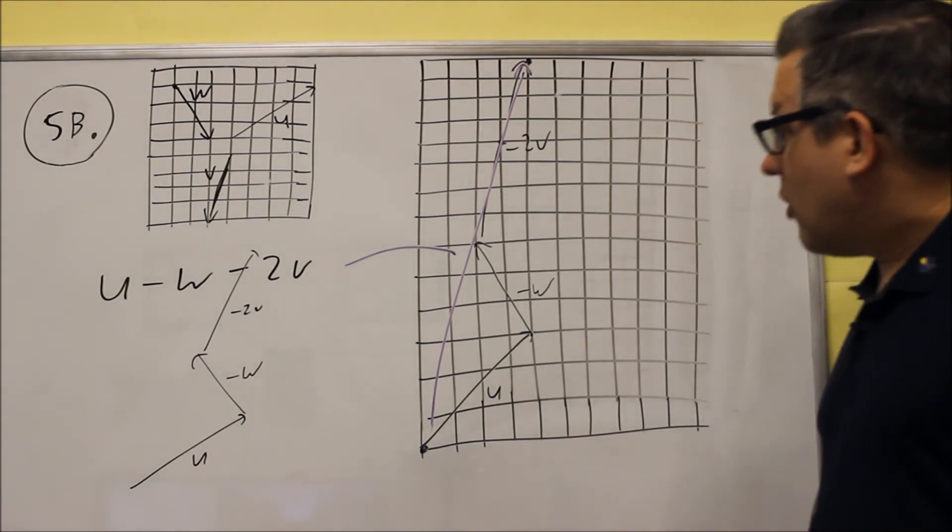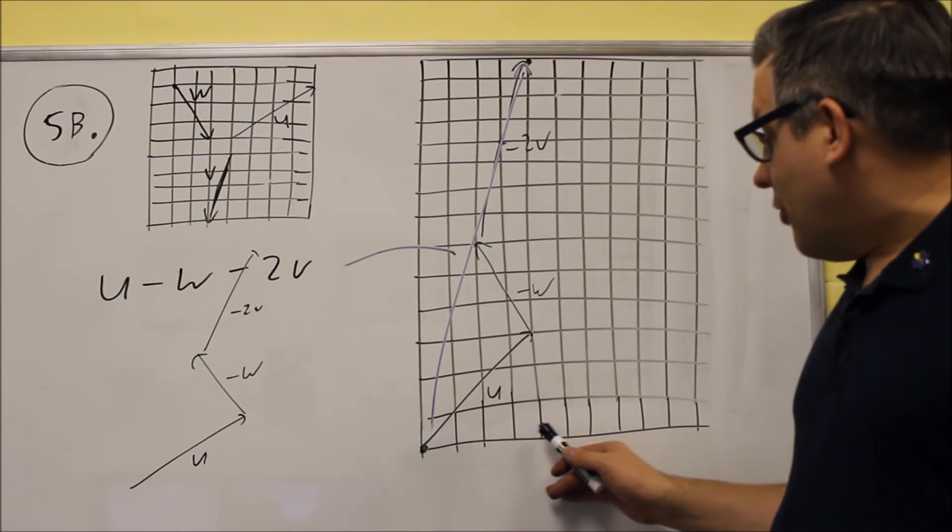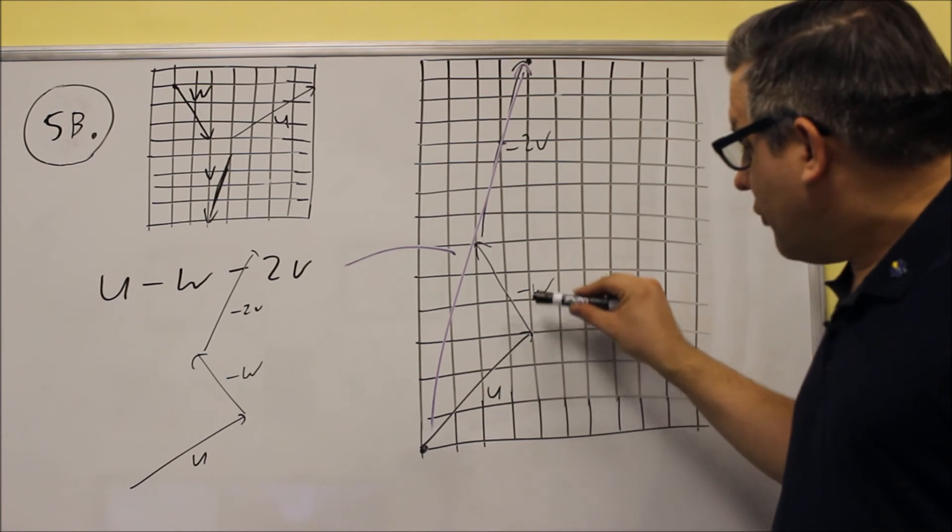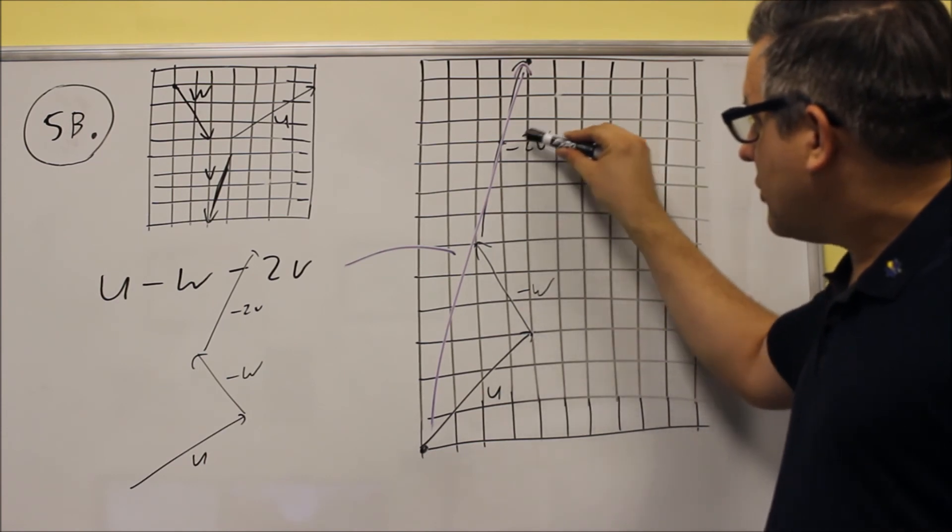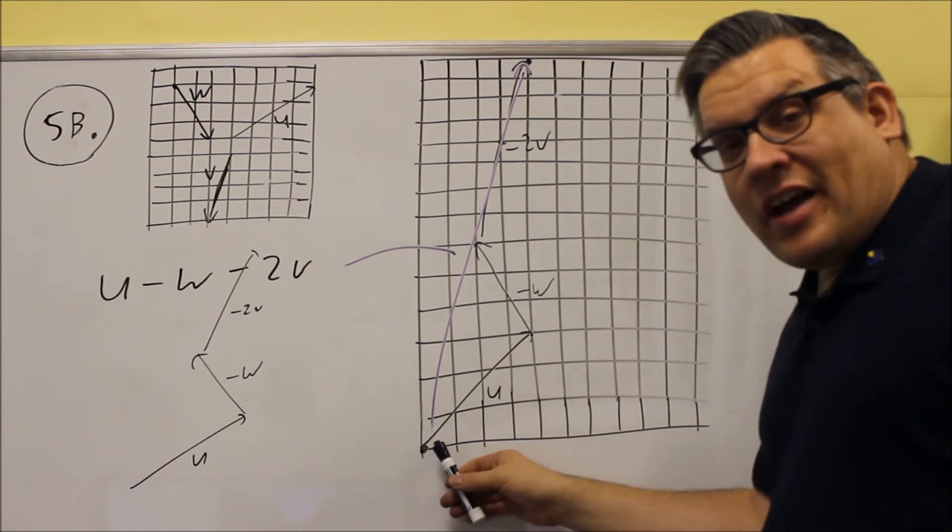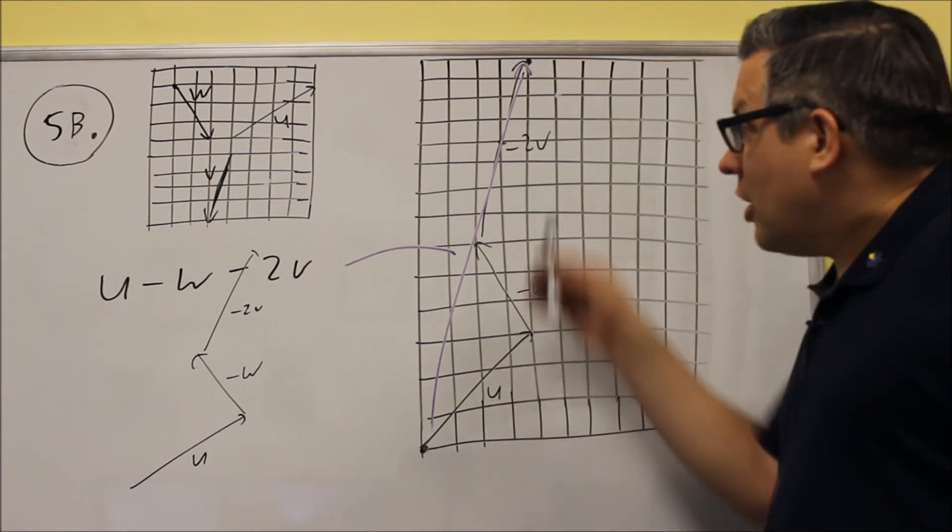Now let's count what we have. From here, we go over one, two, three, four to the right, and then we're going up one, two, three, four, five, six, seven, eight, nine, ten, eleven, twelve, thirteen, fourteen. So my answer, no matter how I draw it, should go four boxes to the right and up fourteen.